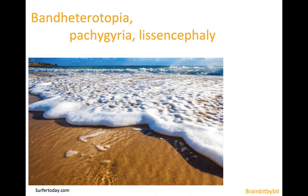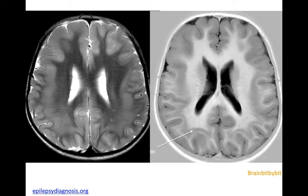Band heterotopia is a special form of heterotopia, and the most favorable end of the spectrum with pachygyria and lissencephaly. Band heterotopia has the same signal intensity as cortex on all MRI sequences, and the band of heterotopic gray matter parallels both the cortex and the ventricular system.